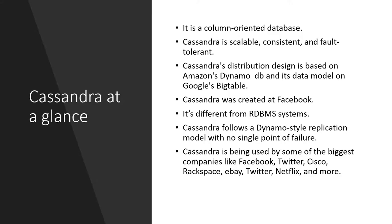Cassandra at a glance: it is a column-oriented database that can scale out. It is very consistent and fault tolerant because of its multiple-node environment. Cassandra's distribution design is based on DynamoDB and Google Bigtable. It was first created at Facebook for inbox search, and it is quite different from RDBMS. Cassandra follows a Dynamo-style replication model with no single point of failure.